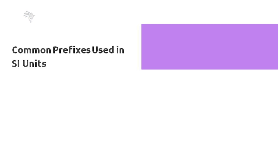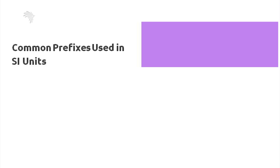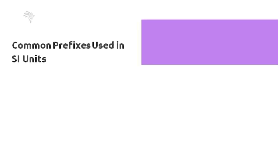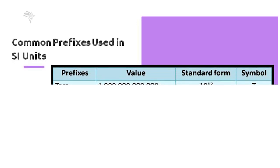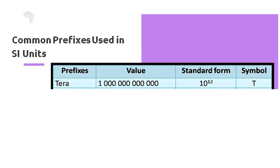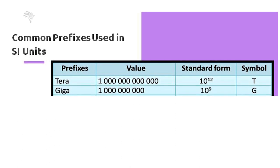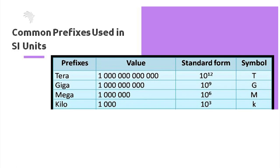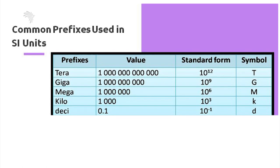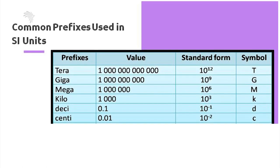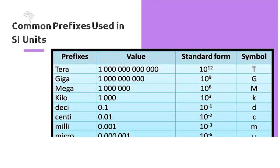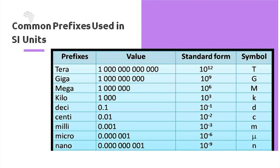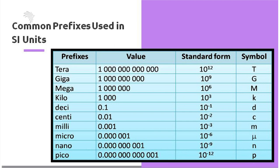Some of the most commonly encountered SI prefixes in chemistry are: tera (trillion, T), giga (billion, G), mega (million, M), kilo (thousand, k), deci (tenth, d), centi (hundredth, c), milli (thousandth, m), micro (millionth, µ), nano (billionth, n), and pico (trillionth, p).